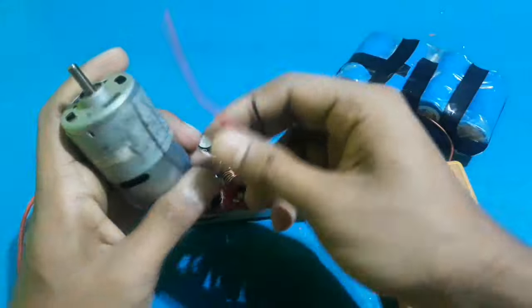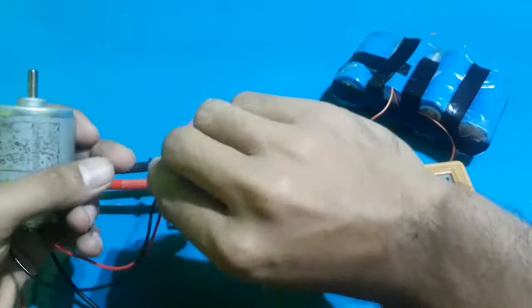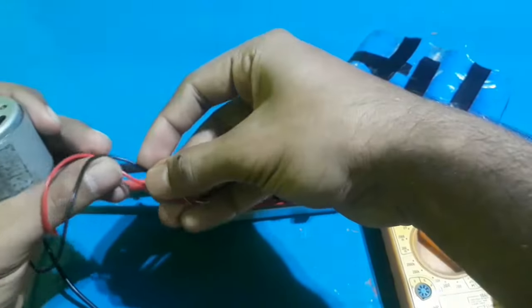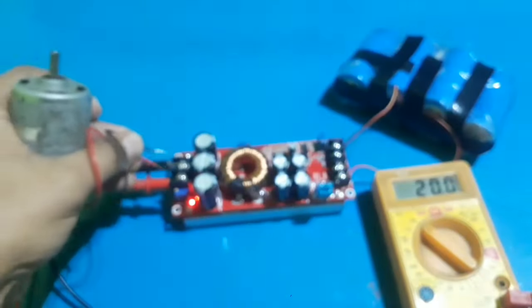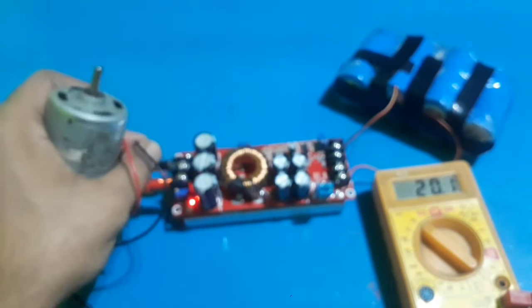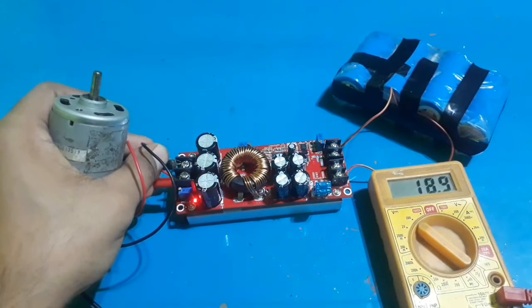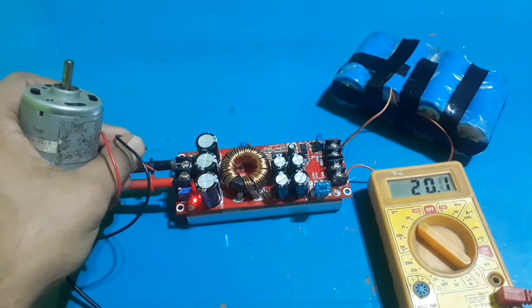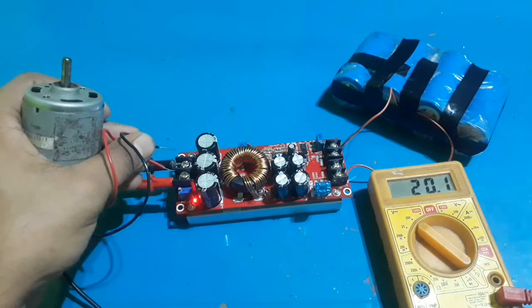Here I'm using a 12 volt, 7 amp, 775 DC motor as a load to measure the output current and voltage. When the load is connected, the voltage drops.